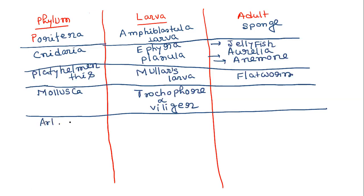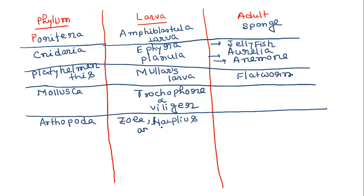In case of arthropoda, the larval stages include zoea larva, nauplius larva, and megalopa larva.